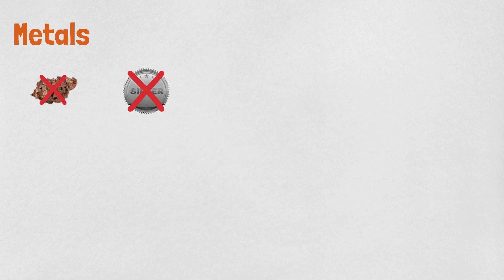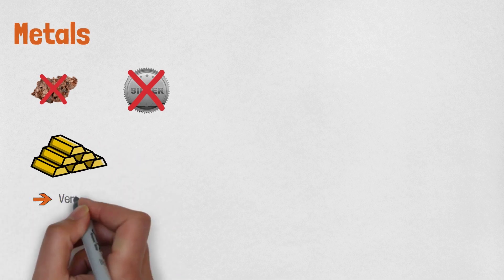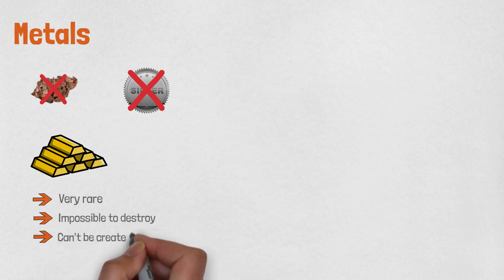However, one metal did succeed as a form of money and that is gold. Gold is a very rare metal. It is impossible to destroy and the most important thing, it cannot be created with technology. It has to be mined. Moreover, since it is very rare, it is not easy to mine it.